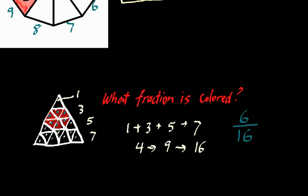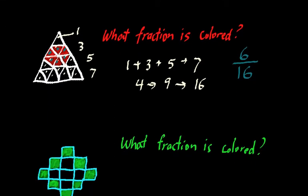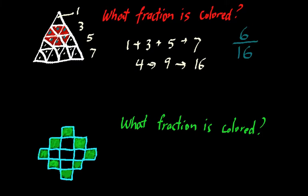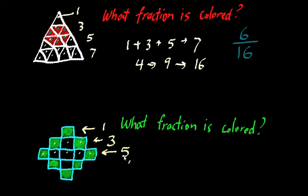Let's do another problem. What fraction is actually colored in the shape on the right? This is a shape composed of a number of squares — let's assume these squares are all about the same size. Counting: 1 square on the top row, 3 squares in the second row, 5 squares in the third row, 3 squares in the fourth row, and 1 square in the fifth row.